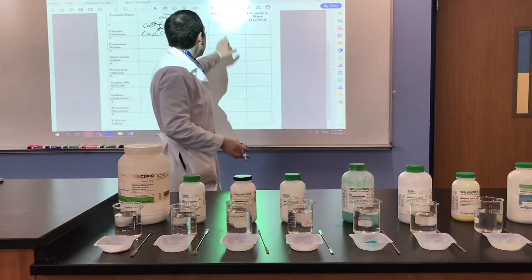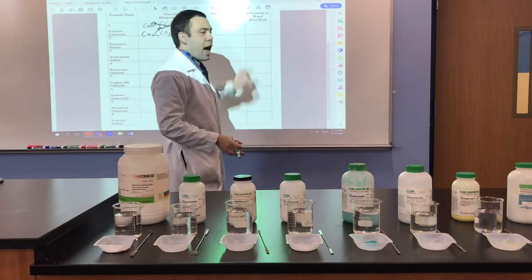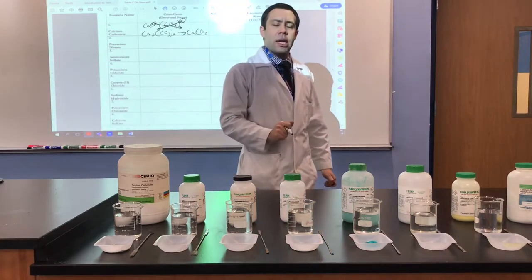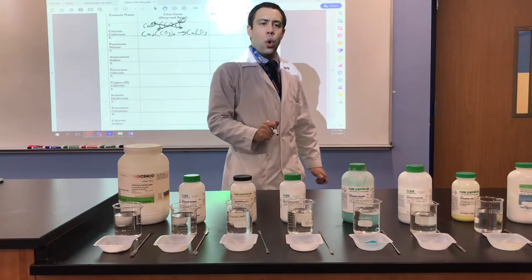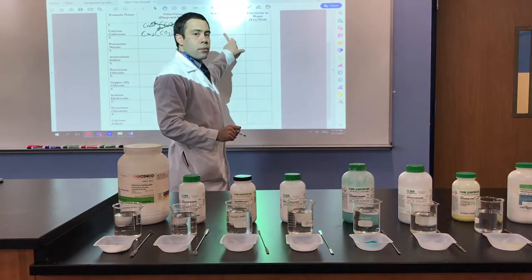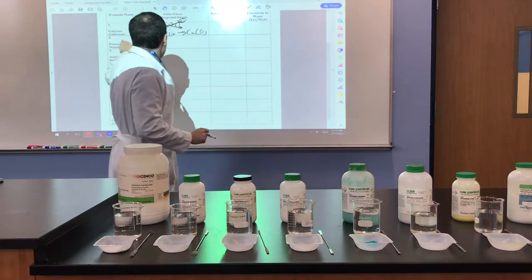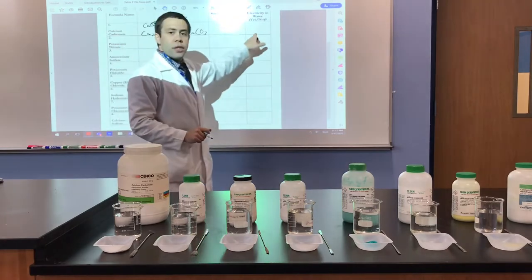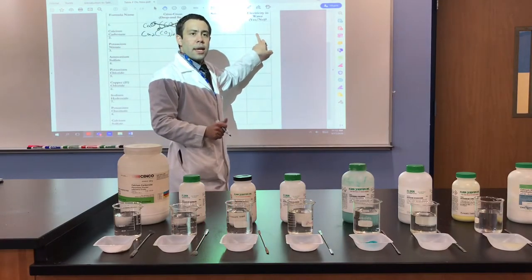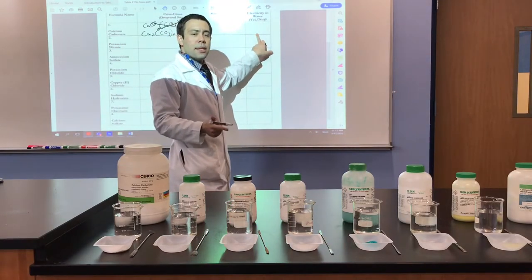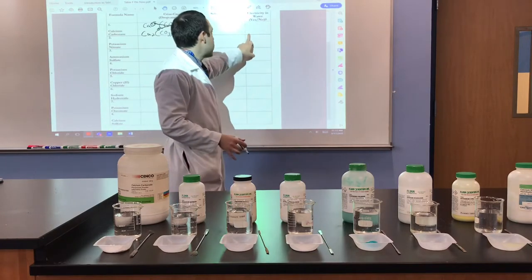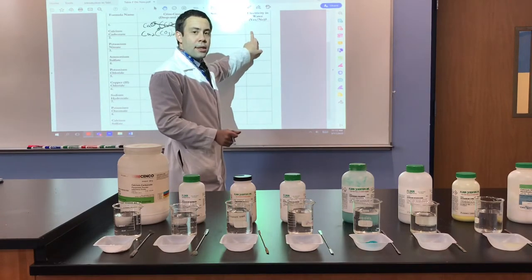From there, you would look on Table F to determine if it was soluble or insoluble when dissolved in water. If it is soluble, ionic bonds should conduct electricity in water, as they are one of the three electrolytes: acids, bases, and salts. Ionic bonds are salts, so you would put yes.